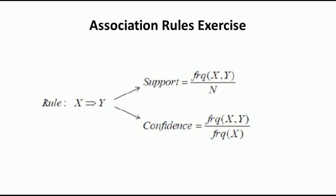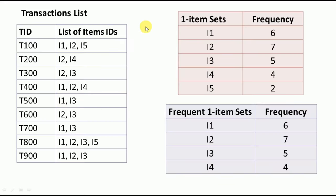In this case the minimum support is equivalent to 2, so we simply need the items to have been bought at least 2 times. The minimum confidence is set at 50%, so we should select rules where the confidence is at least 50%. Now we will start solving the problem. There are 9 transactions and a certain number of products were bought in each transaction.